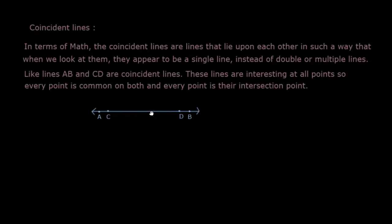So, whenever two lines intersect at more than one point, then they are coincident lines. Because we know that through two given points, a unique line passes. Like lines A, B and C, D are coincident lines.